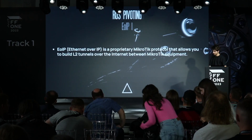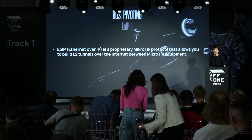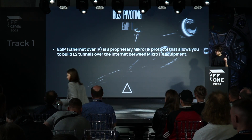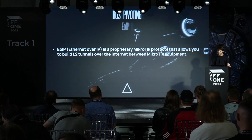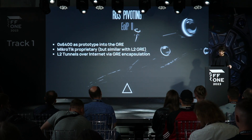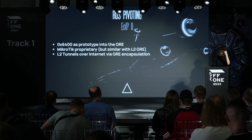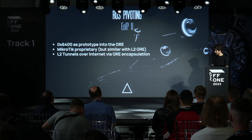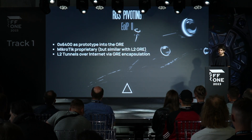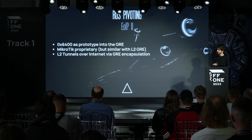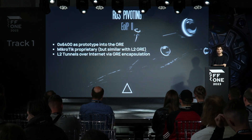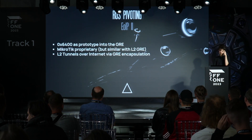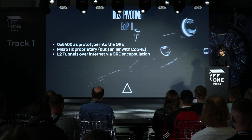Another specific vector is EoIP pivoting. Ethernet over IP is a proprietary protocol of MikroTik that builds L2 tunnels over IP networks. Unlike VXLAN, this is achieved using GRE encapsulation. EoIP is essentially equivalent to Linux's GRETAP interface — they work in the same fashion. The only differentiator is the EtherType: EoIP uses EtherType 0x6400 while GRETAP uses 0x6558. It's a proprietary protocol used to build L2 tunnels.